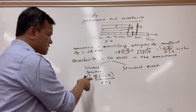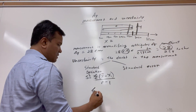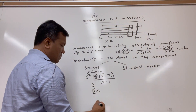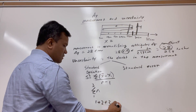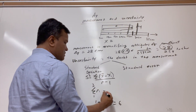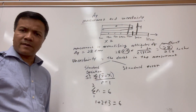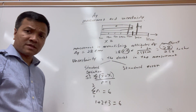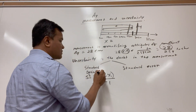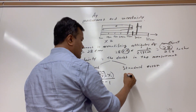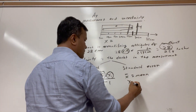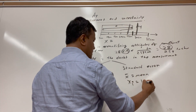Let me explain what sigma means. If I put sigma of n from 1 to 3, with values 1, 2, 3, all it means is 1 plus 2 plus 3, which equals 6. Sigma means sum — that's what sigma means. X-bar is the mean, and x_i is the individual data point.